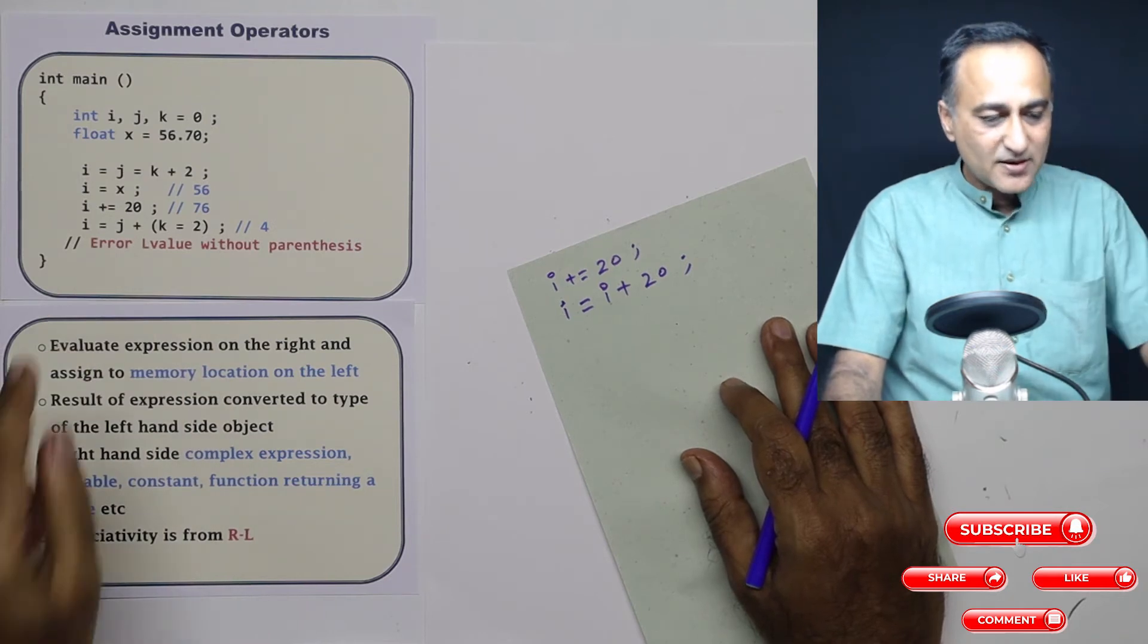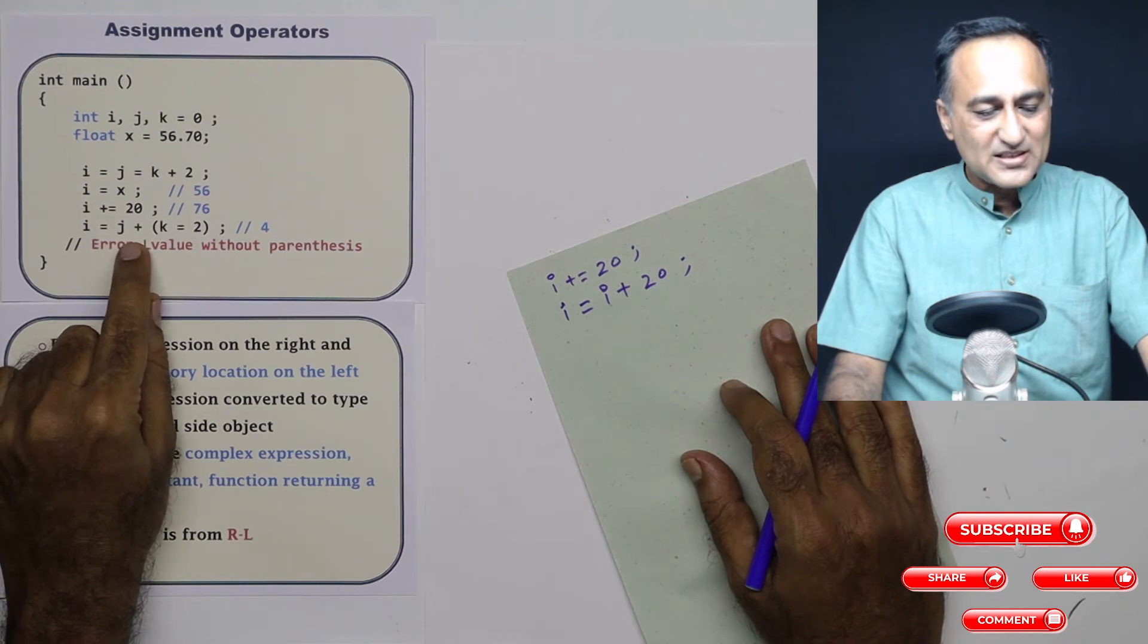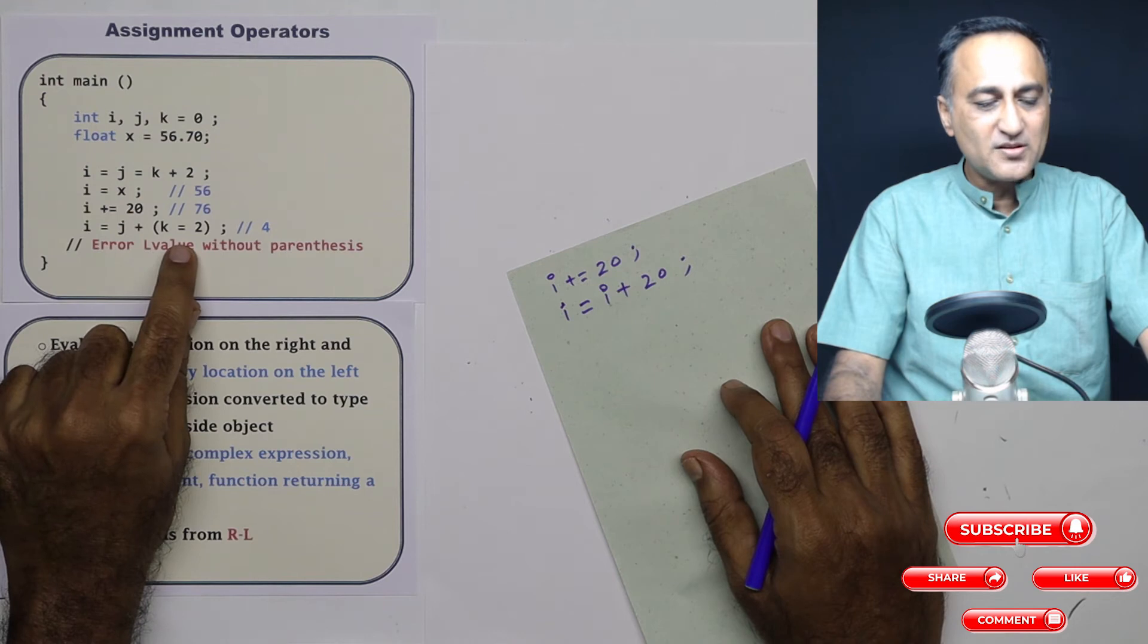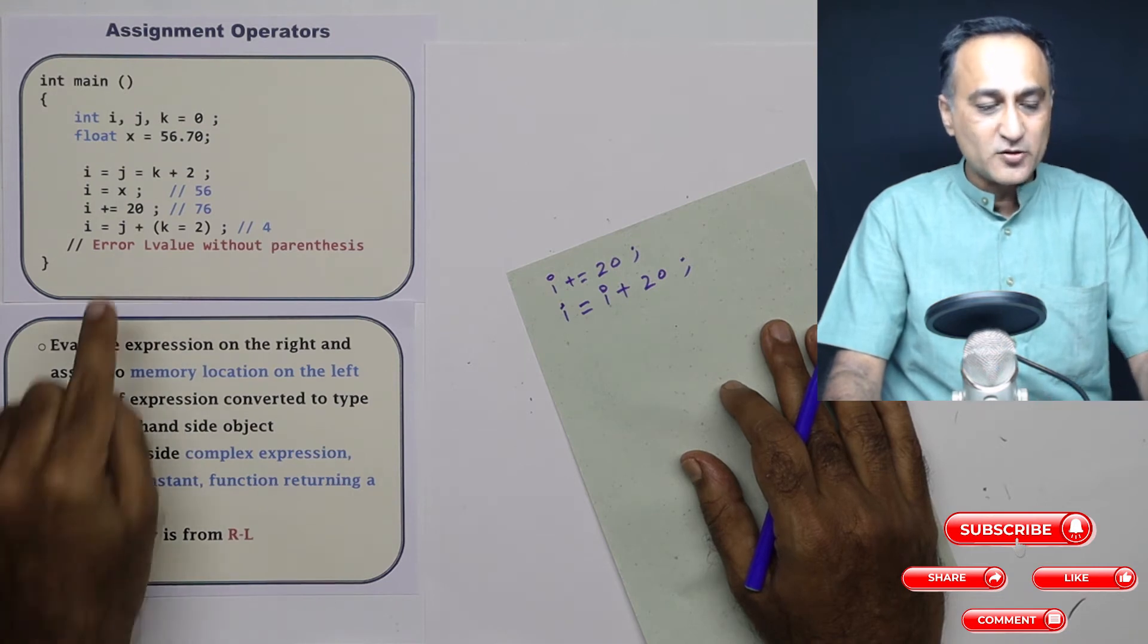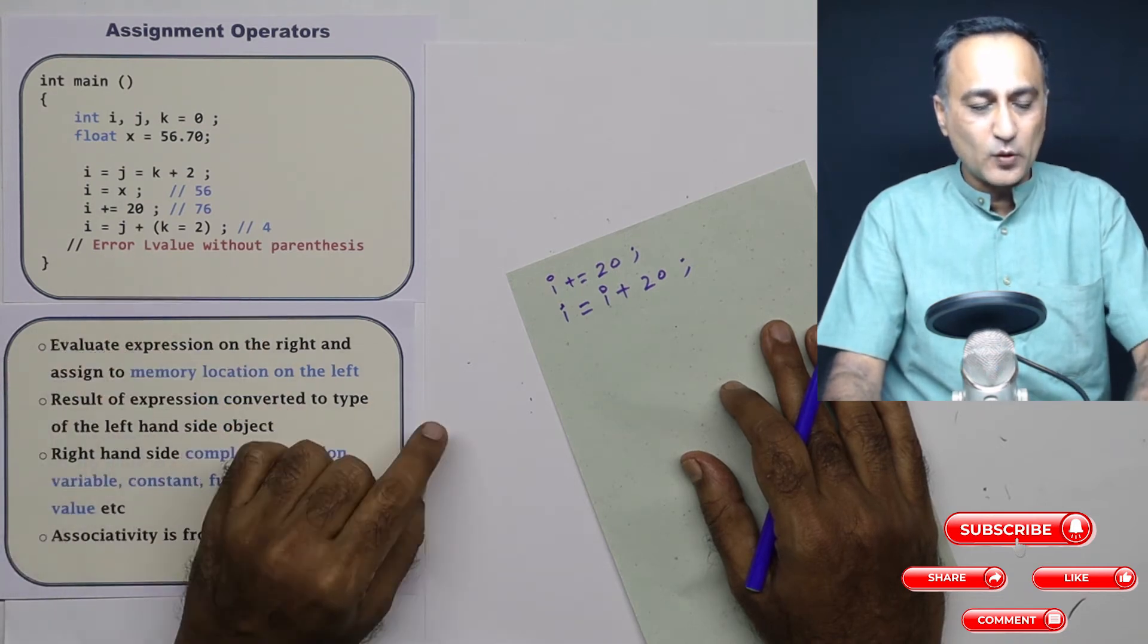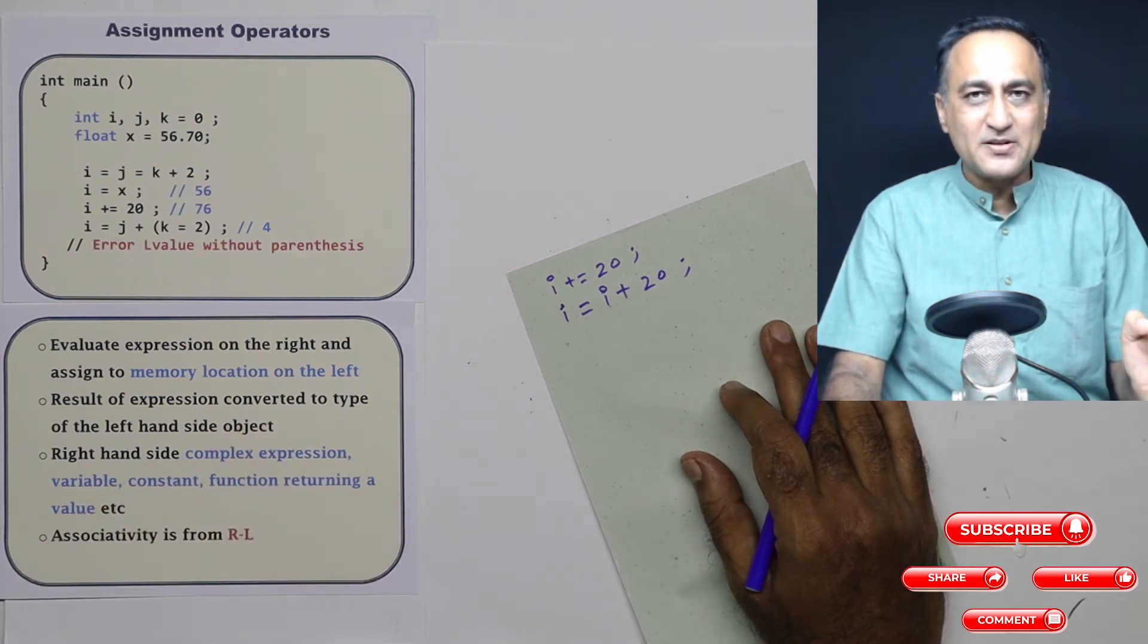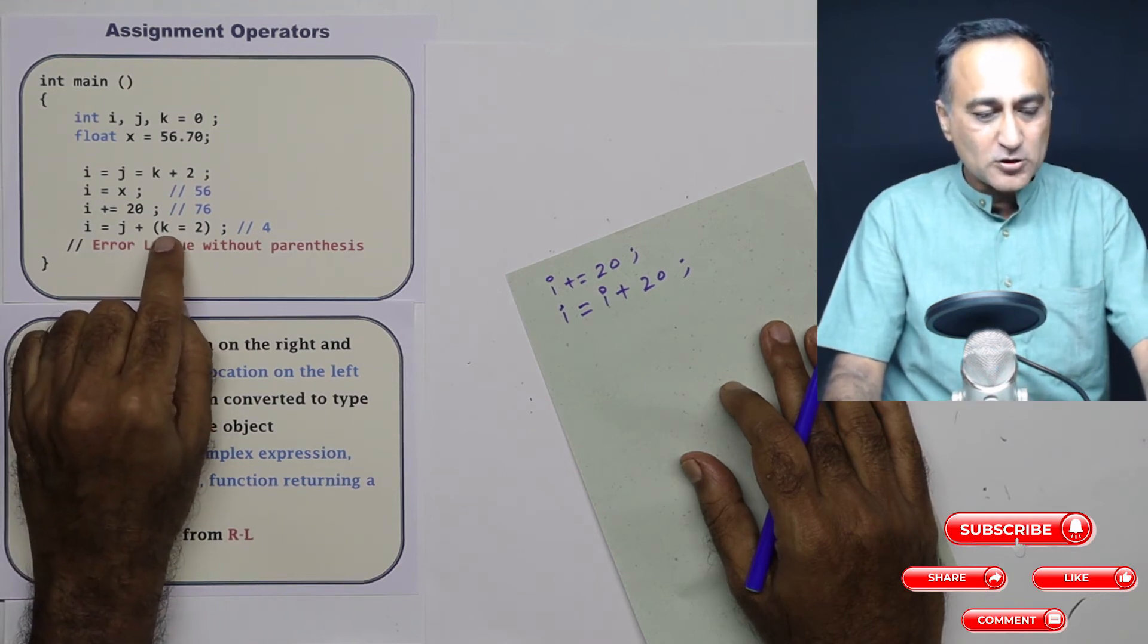The third is an interesting assignment statement: i is assigned j plus k is assigned the value 2. There's a lot of concepts in this one. If you forget to put the parenthesis for this assignment, you're going to get a compile time error saying error l value required. Now what happens here is there is something called a side effect during the evaluation of k equal to 2. k is assigned the value 2.